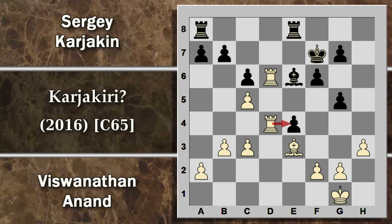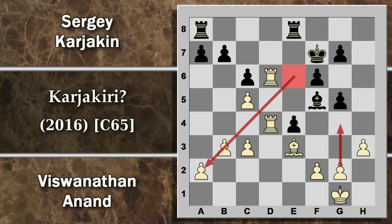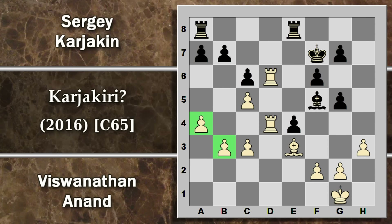Anand prosegue con torre D4, minacciando questo pedone. Per difenderlo viene scelto di usare l'alfiere: in questa posizione non serve quasi più a nulla ora che la diagonale è chiusa. È vero però che questo alfiere è prono a ulteriori attacchi e potrebbe essere costretto ad abbandonare la diagonale abbastanza presto. Prima di giocare G4, Anand comincia ad attaccare sull'ala di donna: l'idea è quella di creare un pedone passato e un problema in più da difendere per il nero. Segue torre E7 per bloccare l'ingresso delle torri in settima nel caso l'alfiere si dovesse spostare.